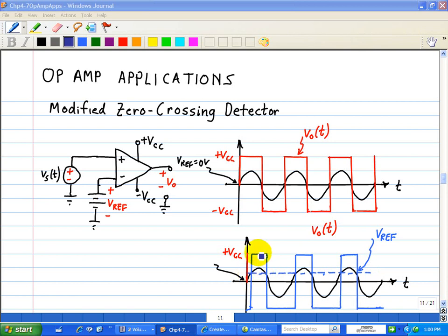Whenever this sinusoidal input is greater than the V reference, it's going to stay at a high state. Here, it's above V reference, so it's at high state. In this portion, it's below the V reference, so it stays at a low state. Here, it's above the V reference, so it's at high state. Below the reference voltage, at the low state. Above the reference, it stays at a high state.